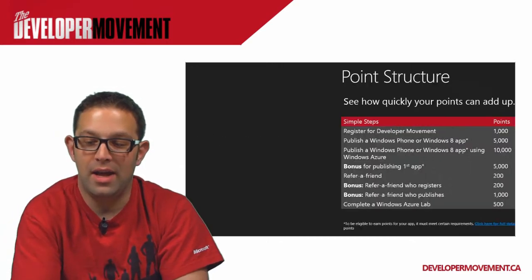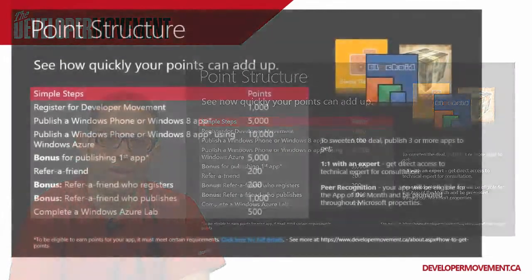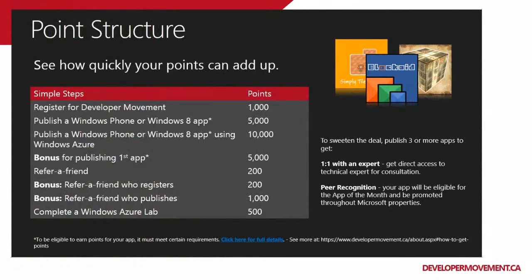The way the rewards work is basically like this: when you register, you get a thousand points. You have the point structure on the screen. If you publish a Windows Phone app, that's 5,000 points. If you publish a Windows 8 application, that's another 5,000 points. And if you add a Windows Azure backend on top of all that, that's a bonus 10,000 points.